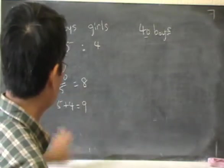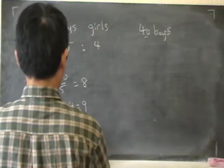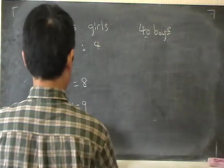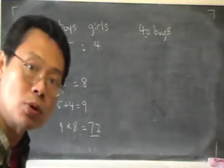Now 1 part is 8. So, 9 parts would be the total. 9 parts would be 9 times 8, which is 72. So that's the total number of children.